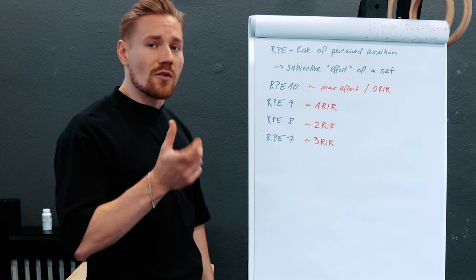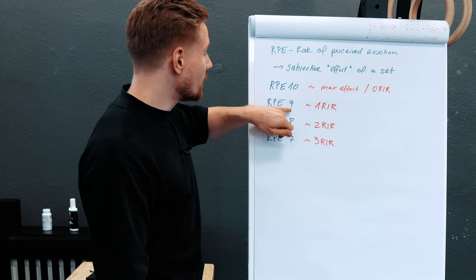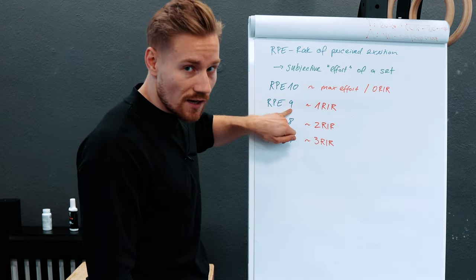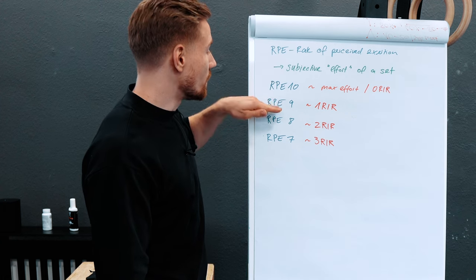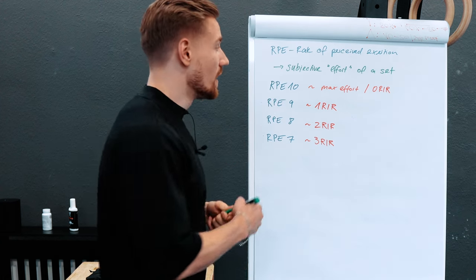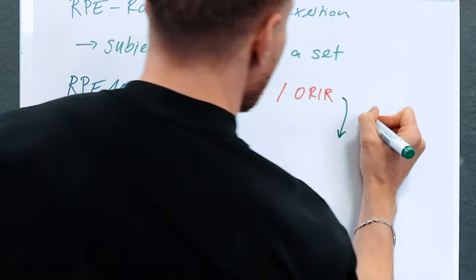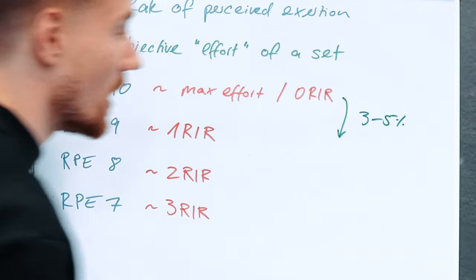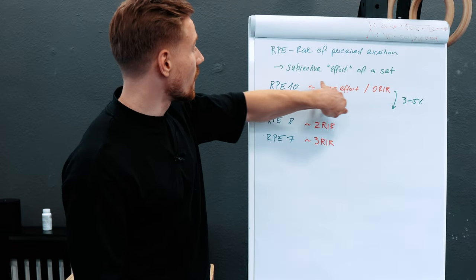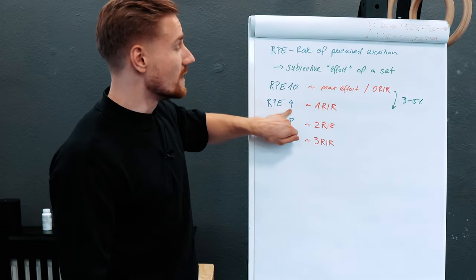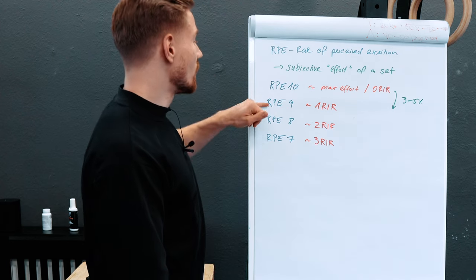Between those RPEs there is always a range. When we rate by percentage of one rep max, something can be heavier than RPE 9 but lighter than RPE 10. If you're more advanced you can use RPEs like 9.5 or 8.5, because depending on the lift and the lifter there's usually about a three to five percent one rep max difference between levels. So for some lifters RPE 9 is 95% of 1RM, for others it's 97%.